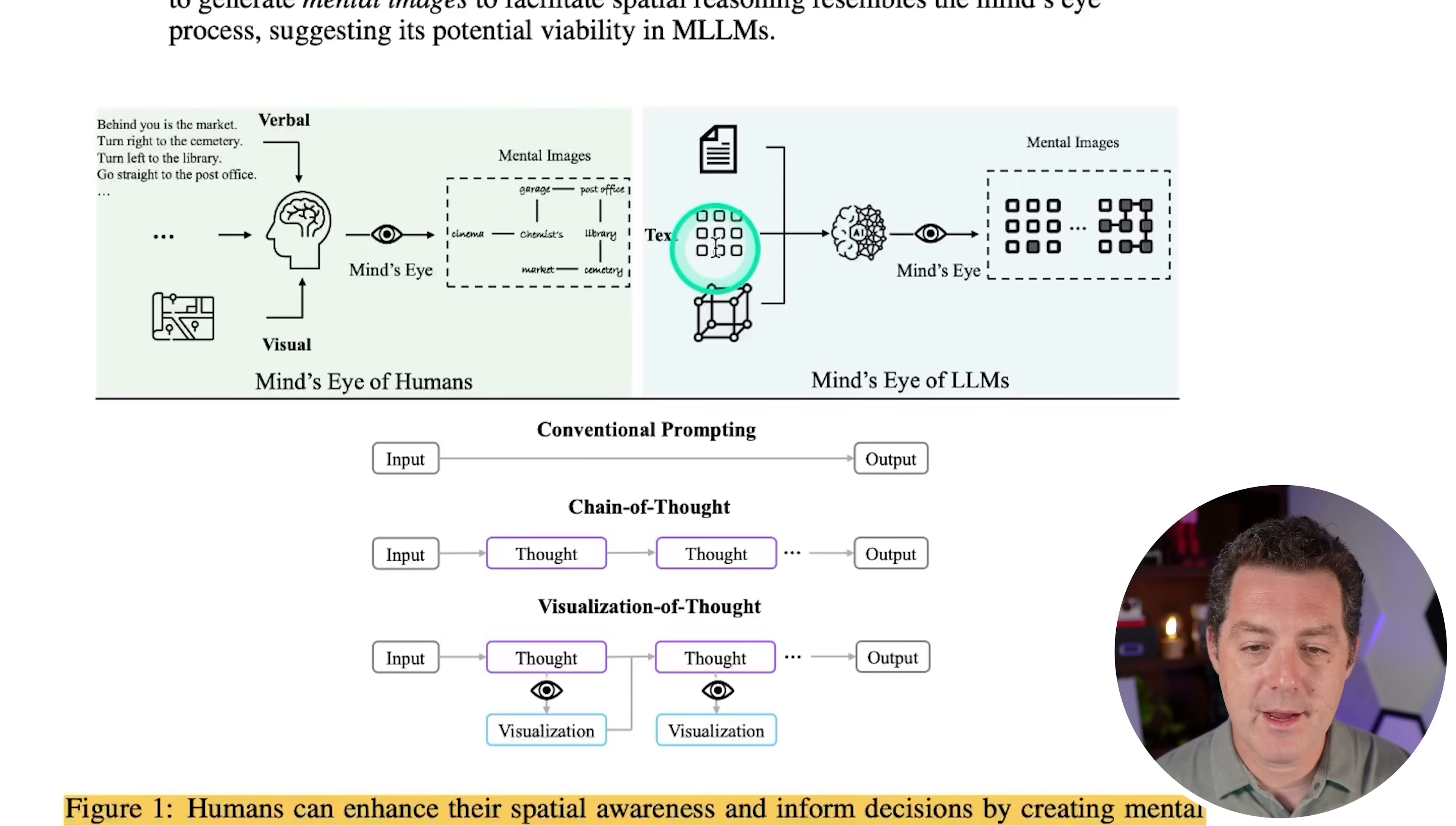So let's look at this diagram. This is what is happening in the human mind. We have visuals. We have verbal language. We put it all together in what is called the mind's eye. And then we put together a mental image of whatever we're thinking about. Now, on the right side is what is the mind's eye of large language models. So really, we only have text language. We put it all together in what is the large language models mind's eye. And then we come up with what is a mental image. So can we actually achieve that with a large language model?